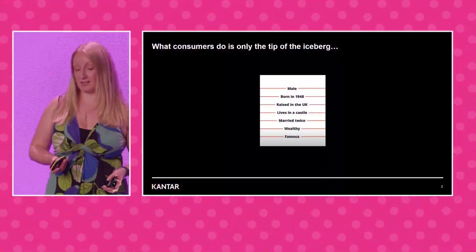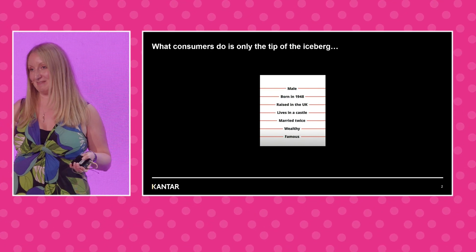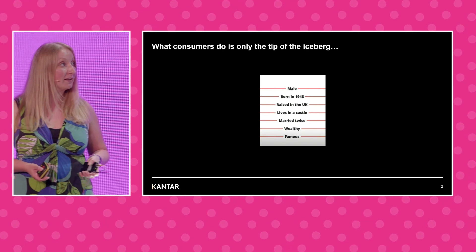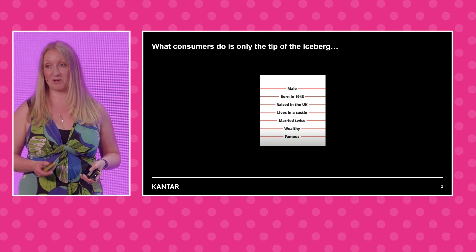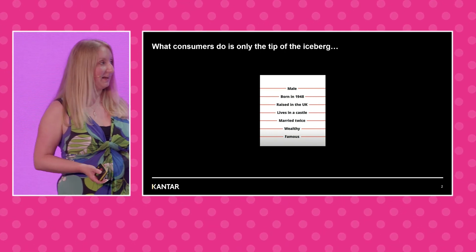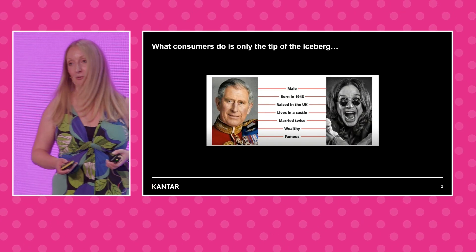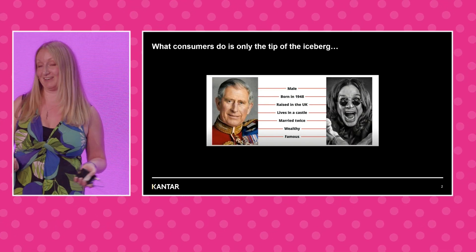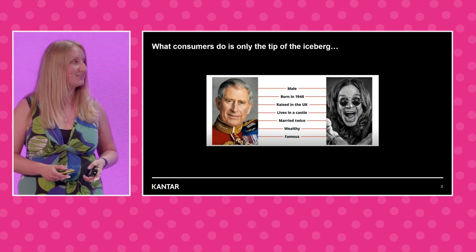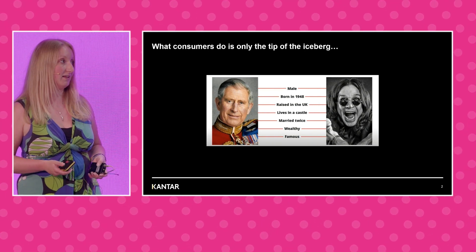A lot of advertising is based on demographics. Here's a profile you may or may not use when targeting your advertising: male, born in 1948, raised in the UK, lives in a castle, married twice, wealthy, famous. That could apply both to King Charles and Ozzy Osbourne — two very different people with very different profiles and very different wants and needs.